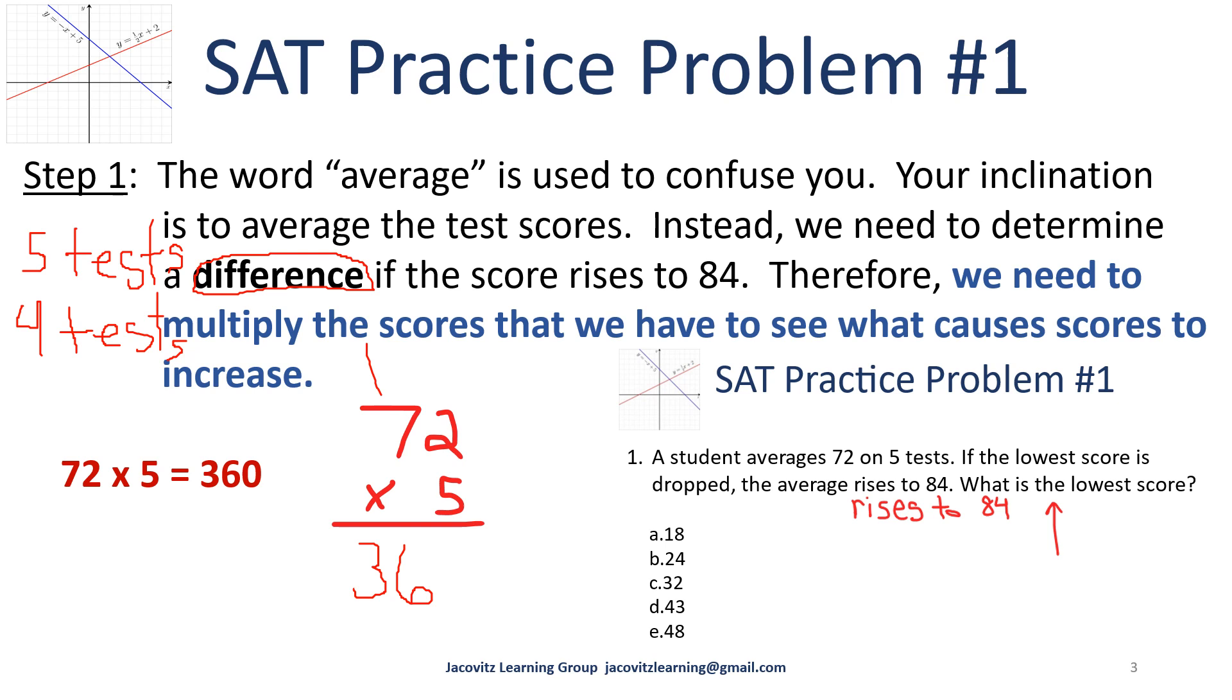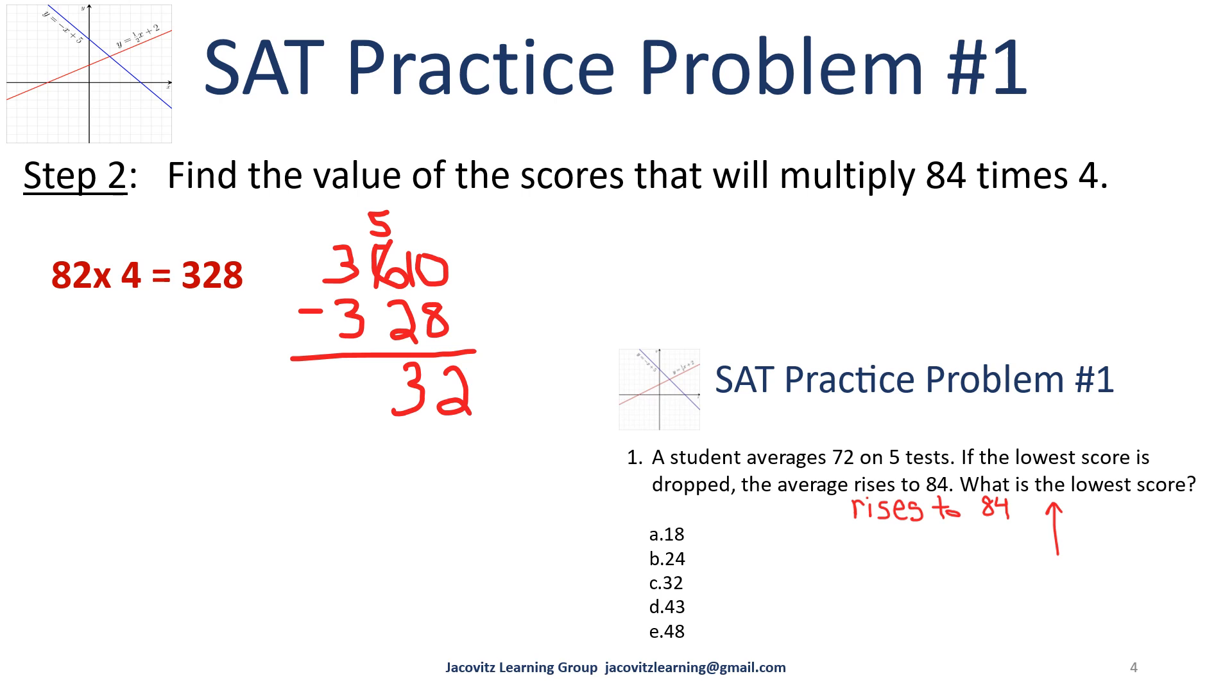Next, we have to move on. After we get the five tests, the next thing we're going to do is the same thing for the fourth test. We multiply 84 times 4 because one of the tests was dropped. You're dealing with two numbers - you started with five, one was dropped.